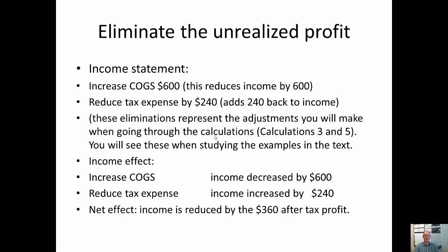When you're going through the textbook, please note that these are part of the calculations — you're going to do this in calculations 3 and 5. Calculation 3 is the calculation of unrealized and realized profit in ending and beginning inventory, and 5 is the calculation of consolidated net income. The effect is to increase cost of goods sold and therefore decrease income by $600, reduce tax expense which increases income by $240, and the net effect is that income is reduced by $360 — the after-tax profit.